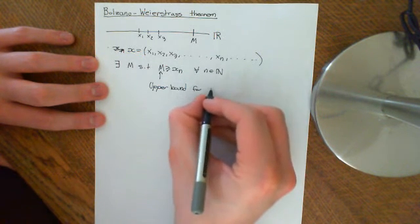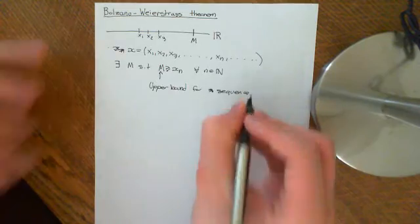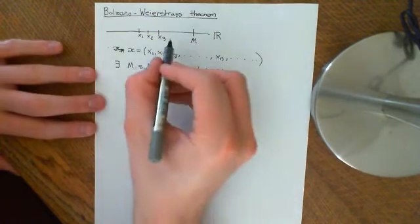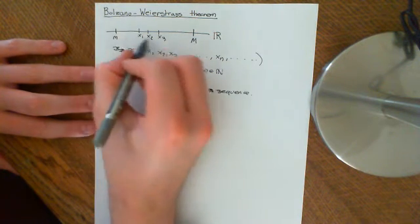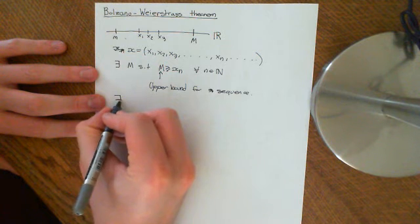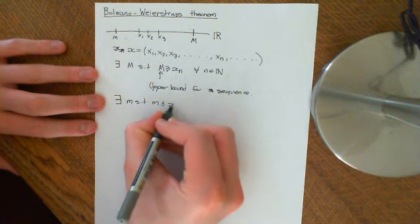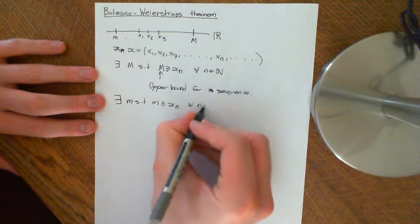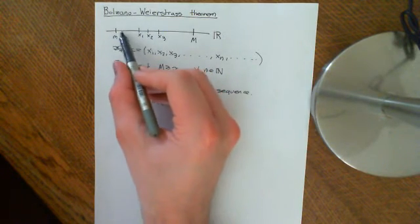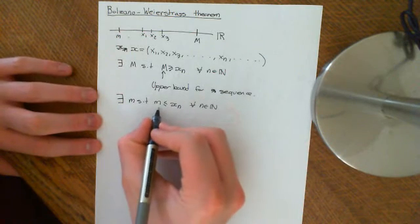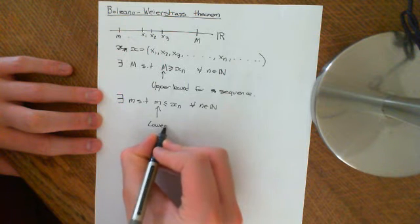Bounded is stronger than just having an upper bound for the sequence. Bounded means that you need to have a lower bound as well, and a lower bound is the exact opposite of an upper bound. So it's some number, let's call it little m, which is smaller than all of the terms of the sequence. There exists a little m such that little m is less than or equal to xn for all n in the natural numbers, i.e. all of the terms of the sequence are greater than or equal to little m. So little m is known as a lower bound for the sequence.